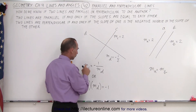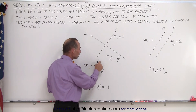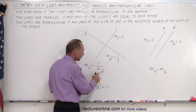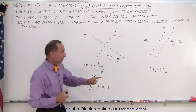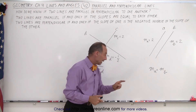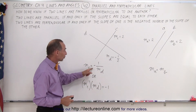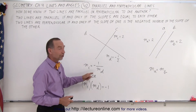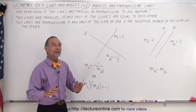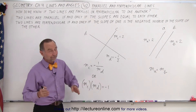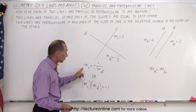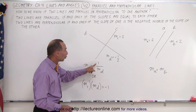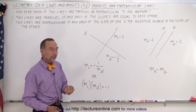In other words, if the slope of one equals negative one over the slope of the other, then the two lines are perpendicular. If they're not equal, and if one is not equal to the negative inverse of the other, then they're not parallel nor perpendicular — there's some other angle between the two. But in this case, you can see that the slope of one is equal to negative one over the slope of the other.